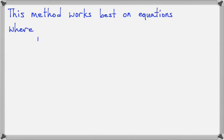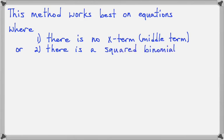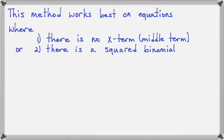This method works best on equations where either you have no x term — no middle term — or you have a squared binomial. Looking back at our examples: the first two had no x term, and the third had a squared binomial. That's how you'll know which problems to use the square root property on — either no x term, or a squared binomial.